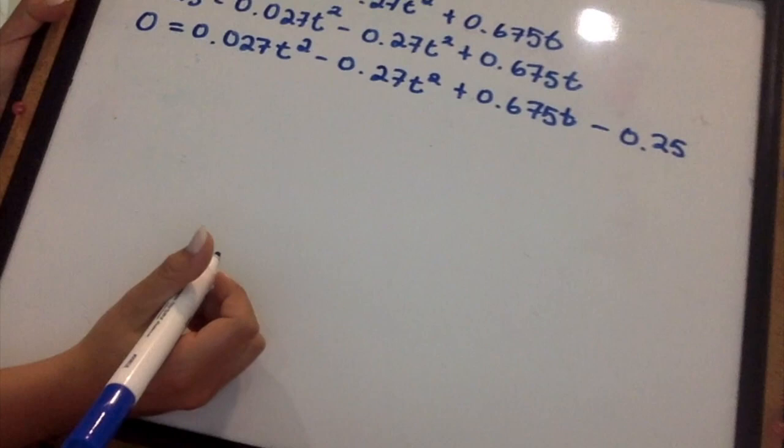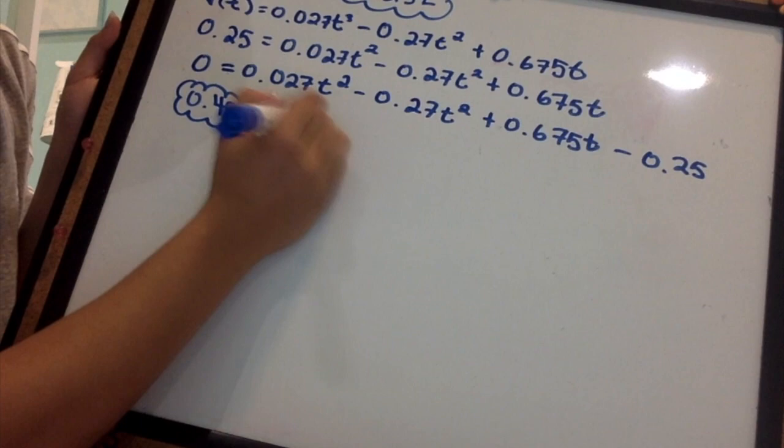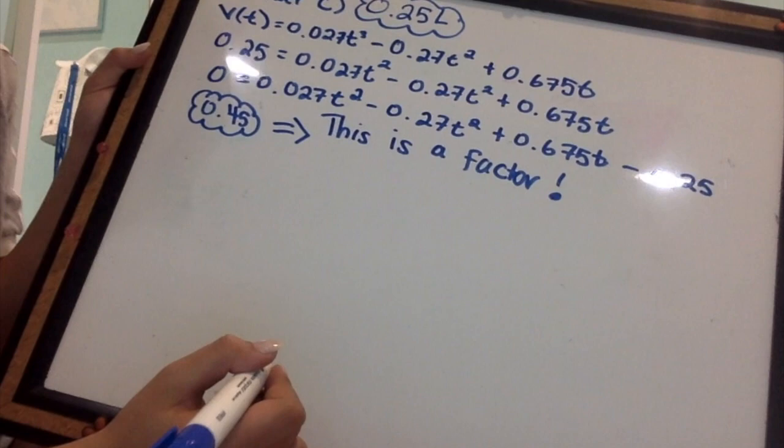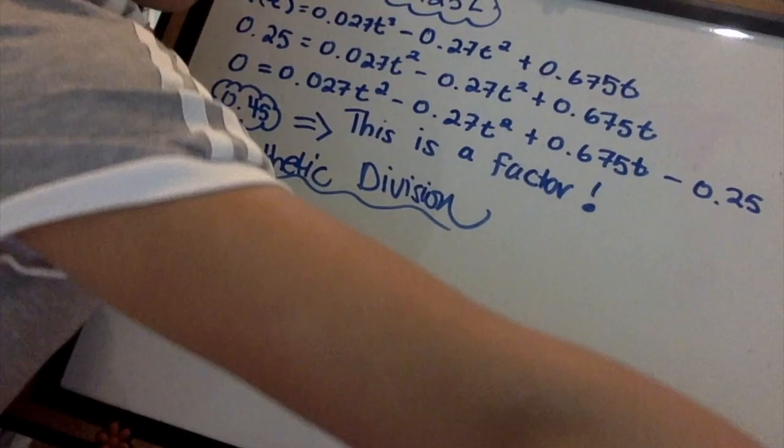From question B, I took a factor of 0.45 as being the first time at volume 0.25 for my graph on Desmos. That means that this variable is a factor. And in order to use the synthetic division, we needed factors of the equation for it to work.